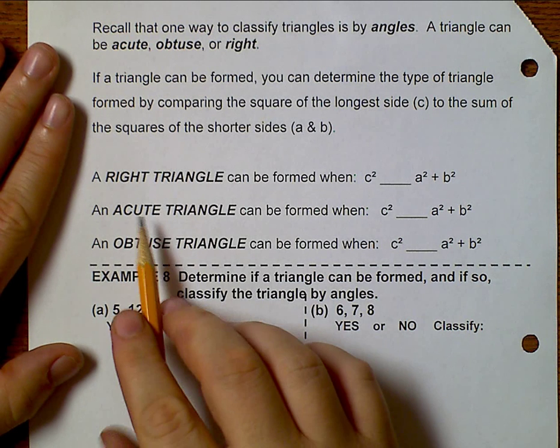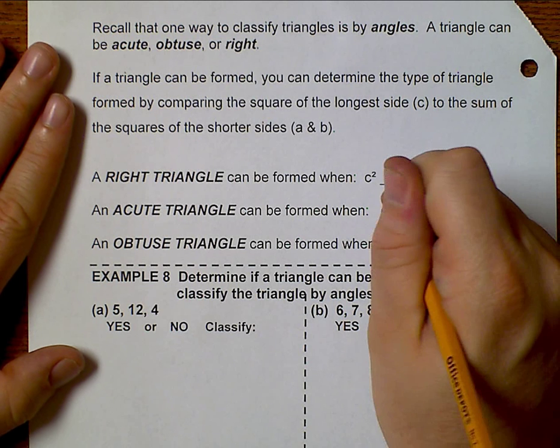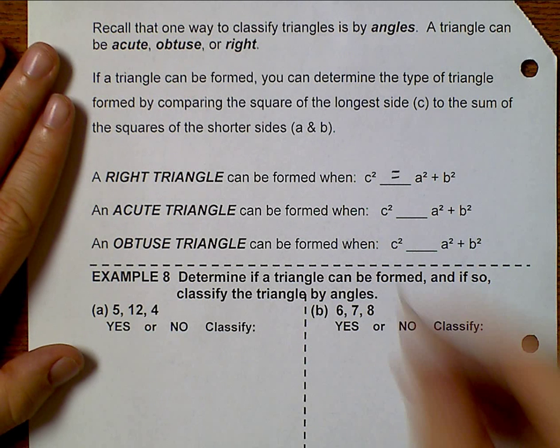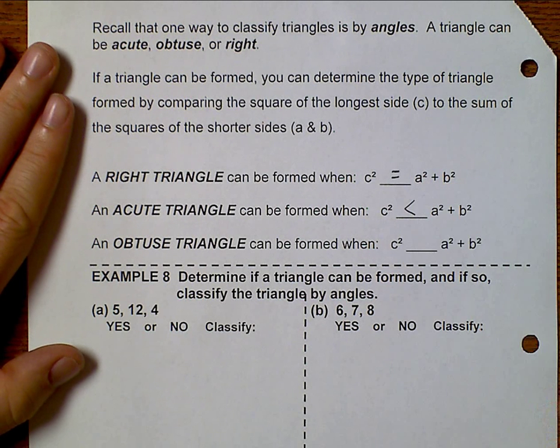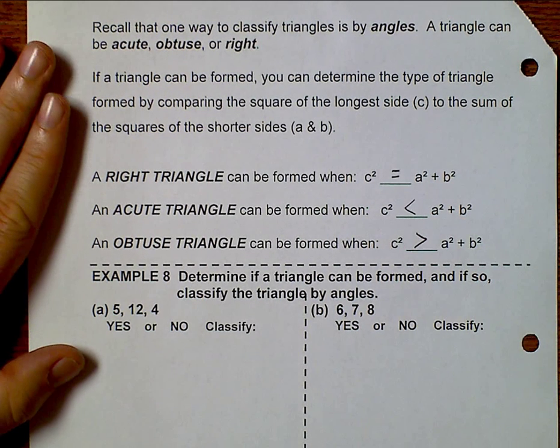Now, we know that a right triangle is formed when c squared equals a squared plus b squared. We get an acute triangle if c squared is less than a squared plus b squared, and obtuse if c squared is greater than a squared plus b squared.